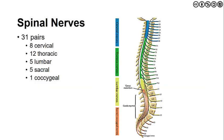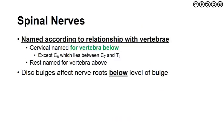Even though there are only seven cervical vertebrae, there are eight cervical nerves, because C1 exits between the OA joint. All other regions match vertebral and nerve count: 12 thoracic vertebrae yield 12 nerves, five lumbar yield five, and so on. In the cervical spine, nerves are named for the vertebra below, except C8, which lies between C7 and T1. Below the cervical spine, nerves are named for the vertebra above.